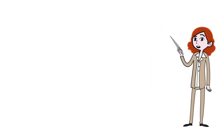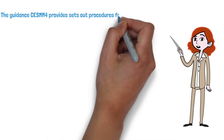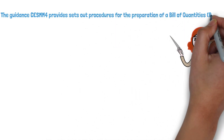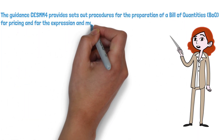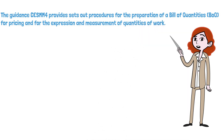The guidance CESMM provides sets out procedures for the preparation of a bill of quantities for pricing and for the expression and measurement of quantities of work. Once a BOQ has been built, it permits tenders to be prepared efficiently and can be used to value and monitor work completed once the contract has been awarded.